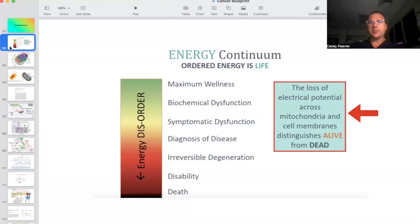I wanted to get started with this because it's fundamental for us all to understand that life is energy. In particular, that energy we're talking about when it comes to life originates in the mitochondria, specifically across the inner mitochondrial membrane. As it says on the slide, the loss of electrical potential across mitochondria and cell membranes distinguishes alive from dead. As you can see here, this is the end result of having no energy at all - death, not being alive. Then there is maximum wellness, which is perfectly functioning mitochondria, abundant energy, and a well-oiled machine.